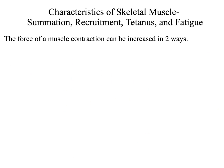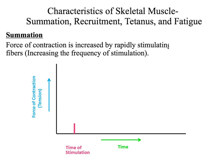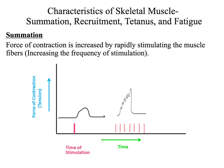How can the force or strength of a muscle contraction be increased? It can increase in two ways: by summation and by recruitment. During summation, the force of a contraction is increased by rapidly stimulating the muscle fibers — in other words, by increasing the frequency of stimulation. If we have a single stimulation, we get a muscle twitch. But with multiple stimulations occurring successively one right after the other, we end up with twitches that add upon one another or summate, because previous twitches are never allowed to fully relax, resulting in an increase in force or strength of contraction.